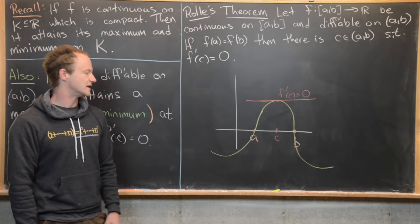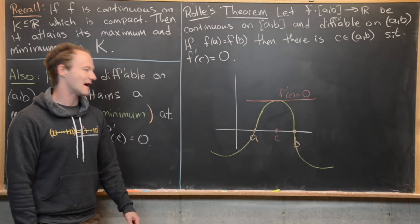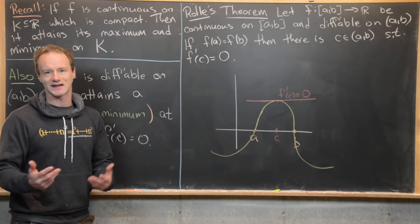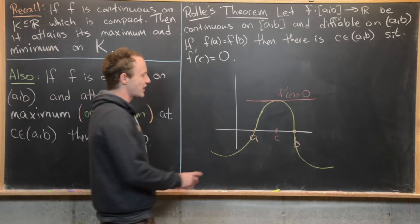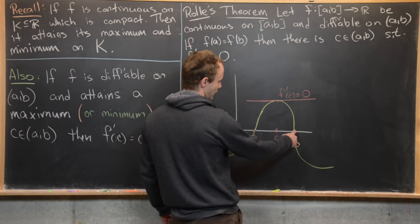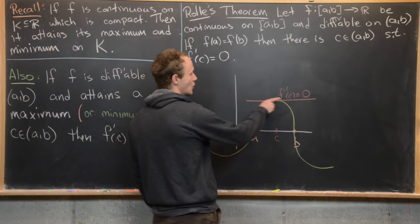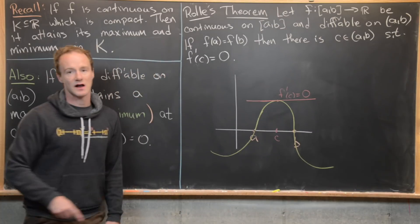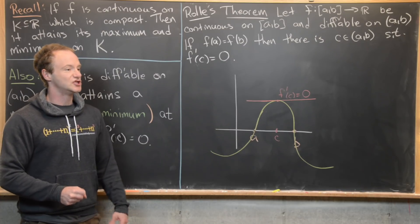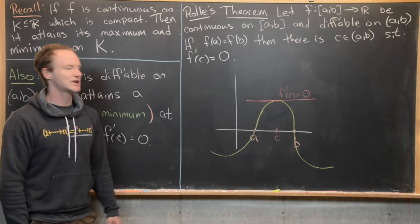The basic idea is you've got this function that has the same value at two points a and b. I've made that value equal to zero, but it really could be anything — we could just translate it down to the x-axis. If you think about drawing a smooth curve through these two points, the only possible way to do that will achieve some spot on the curve that has a horizontal tangent line. A horizontal tangent line geometrically means the derivative is equal to zero.